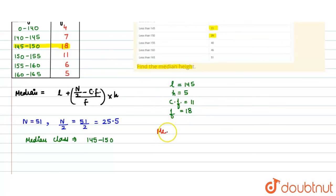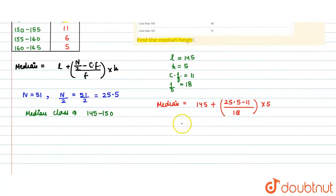You can write the median will be equal to L. The value is 145. The n by 2 is 25.5. The cumulative frequency is 11 upon frequency is 18.